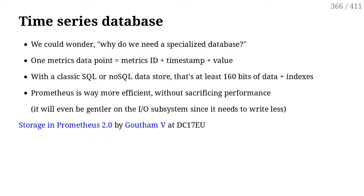Prometheus has a specialized data storage engine. We could wonder why we need a custom engine — why can't we just use MySQL or Postgres? The answer is efficiency. If we use a SQL store, for each data point we need at least a timestamp, a value, and something indicating what data this is — memory, CPU, which machine, etc. That's at least between 1 and 200 bits of data for just one data point. The engine used by Prometheus can sometimes go as low as a few bits per data point.